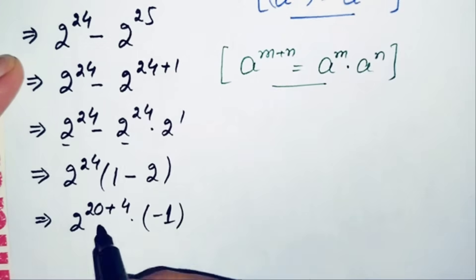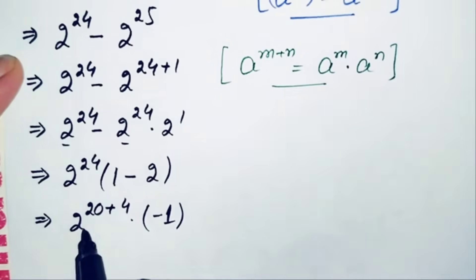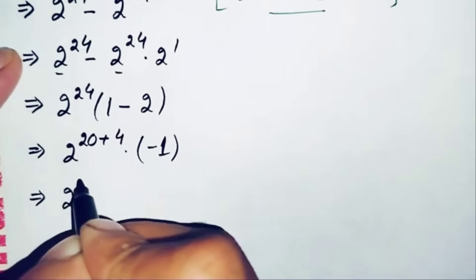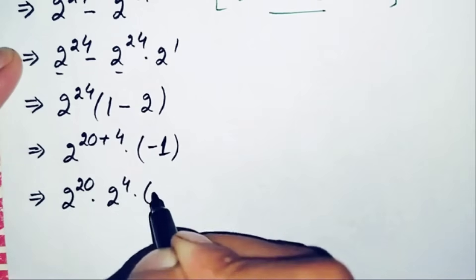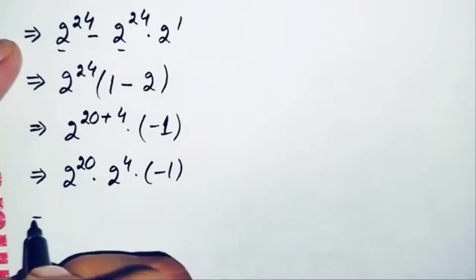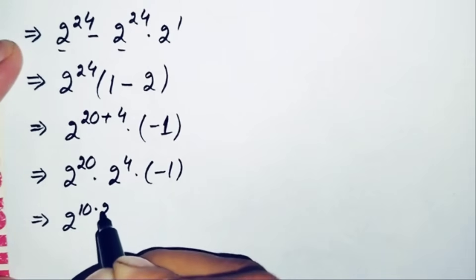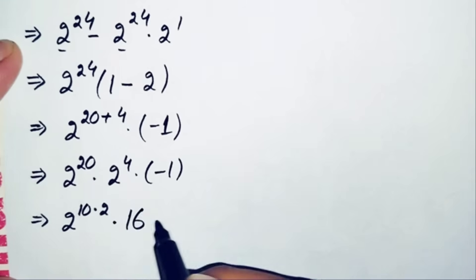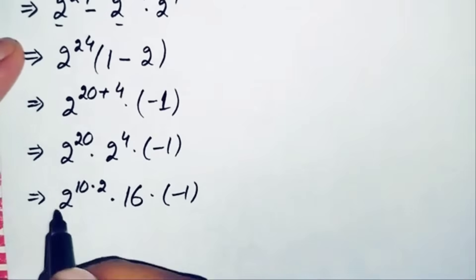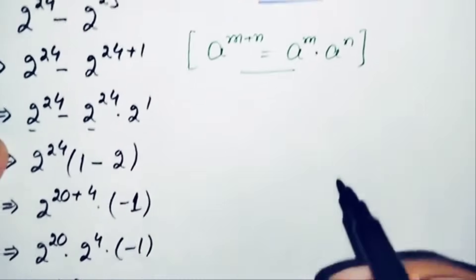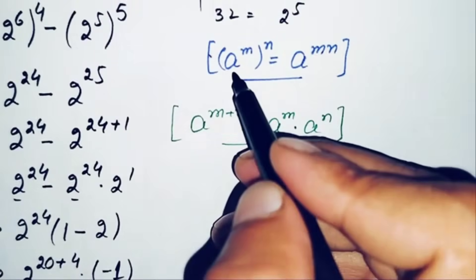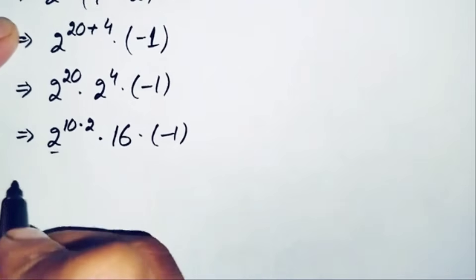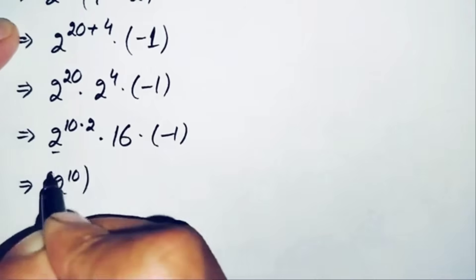Next, we rewrite 2^24 as 2^(20+4), splitting the exponent. Using the property again, this becomes 2^20 times 2^4. Then we rewrite 2^20 as 2^(10 times 2), and apply the property r^(m×n) = (r^m)^n to get (2^10)^2. So the expression becomes (2^10)^2 times 2^4 times negative 1.